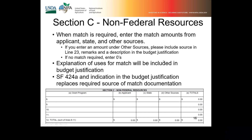The last page, Section 3 — page 3. When match is required, you'll need to enter the match amounts under applicant, state, or other sources. Normally we only see this in the state field, so you would put your matching amount there. If it's coming from the applicant or other sources, the amounts go in those slots. The explanation for the uses of the match will be included in the budget justification. If you submit a budget and budget justification, you do not also need to submit the required source-of-match documentation — the signed letter on letterhead from an authorized university representative.